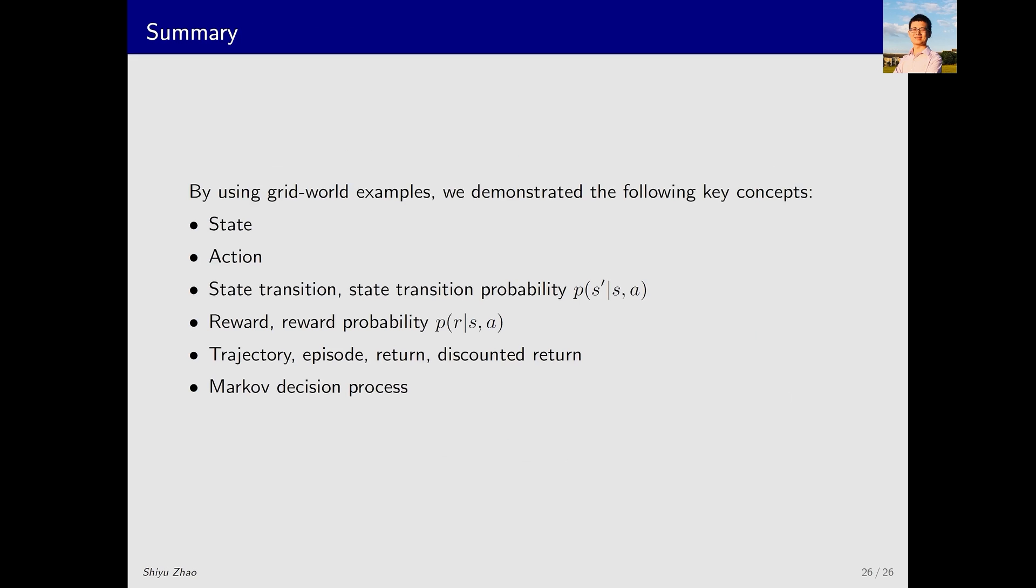This concludes the entire content of this lecture. To briefly summarize, in this lecture we introduced several key concepts through the grid world example and the Markov decision process. These concepts include state, action, state transition, reward, trajectory, episode, return, and discounted return. Additionally, we introduced the concept of the Markov decision process. That concludes all the content for this lecture. Next time, we will study the Bellman equation.